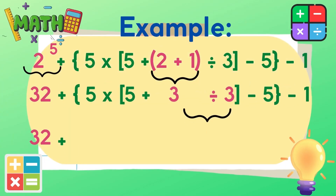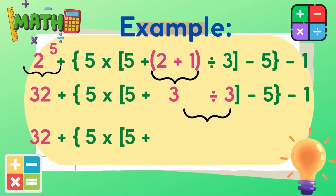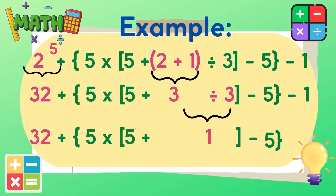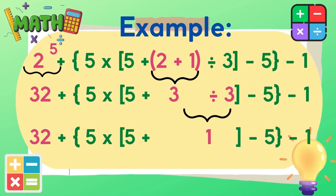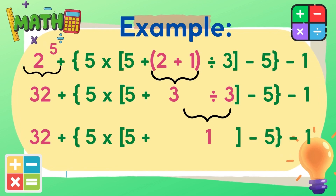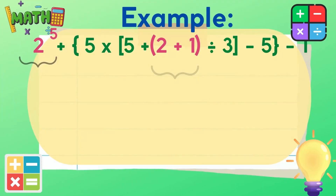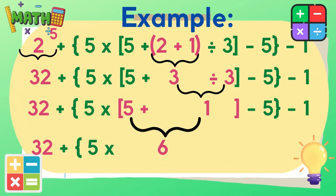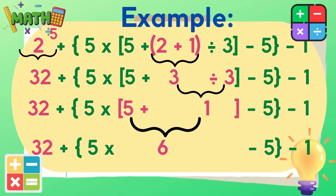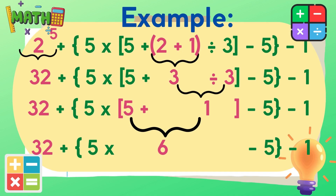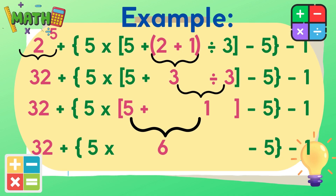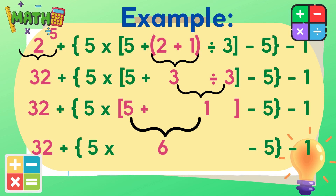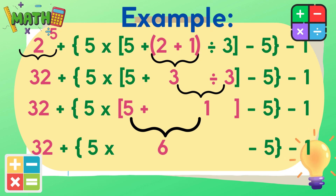Next, let's perform the operations inside the brackets. We have addition and division, so we need to divide first. 3 divided by 3 is equal to 1. Next, 5 plus 1 is equal to 6. We are all done with operations inside the parentheses and brackets.